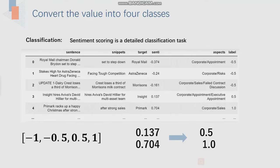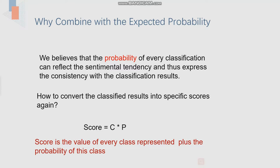The classes can divide it to minus 1 to 1. When the value is 0.137, its classification is 0.5. We can combine the expected probability because we believe that the probability of error classification can reflect the sentimental tendency and thus express consistency with the classification results.